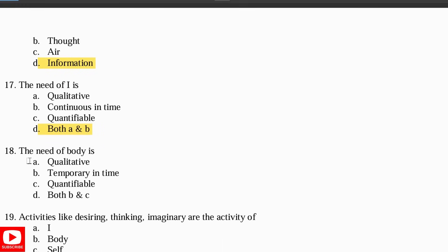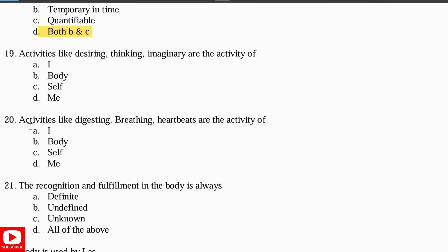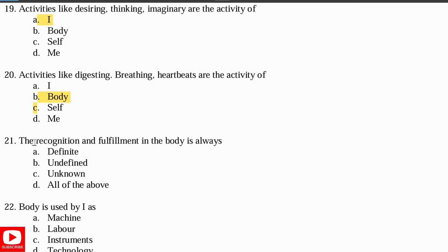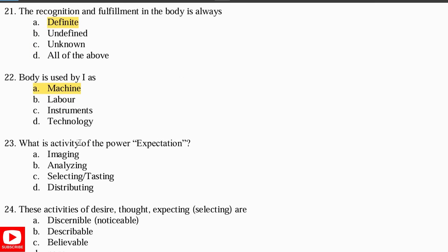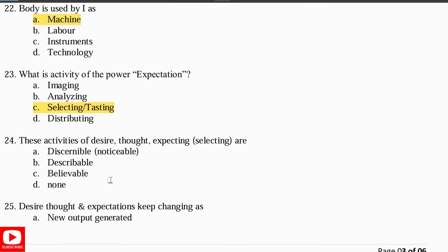The need of the body is both quantifiable and temporary. Activities like desiring, thinking, imagining are the activities of I, whereas digestion, breathing, and heartbeats are the activities of the body. The recognition and fulfillment in the body is always definite. The body is used by I as a machine.